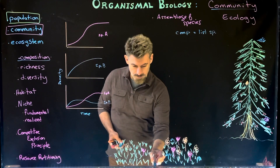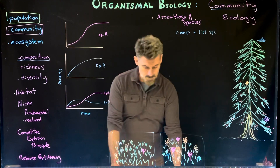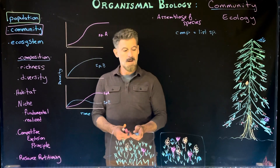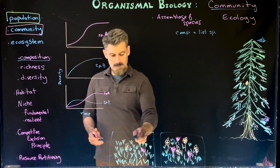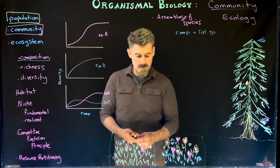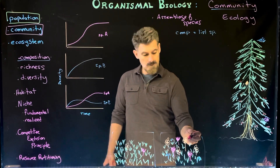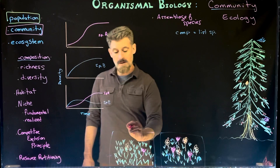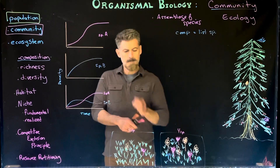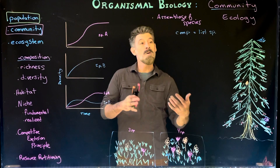Let's say these are two separate environments we're comparing. In the first area we have grass, an orange flower, and a pink flower — three species. In the second area we have those same three plus a blue flower, giving us four different species. So this second one has a slightly greater species composition.